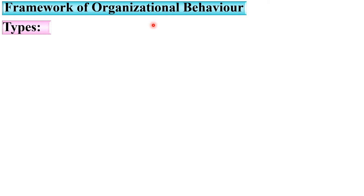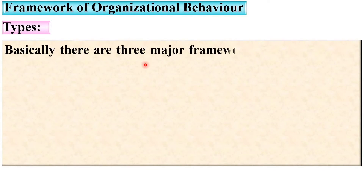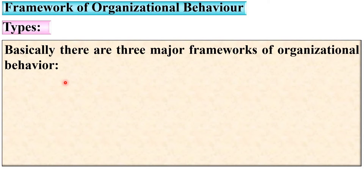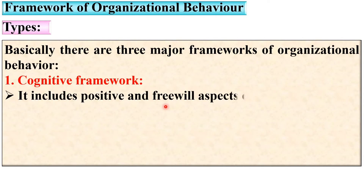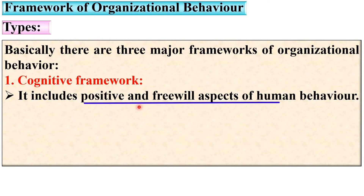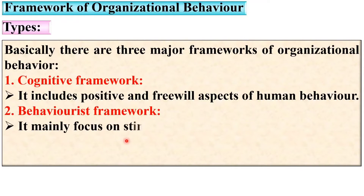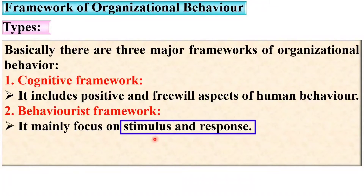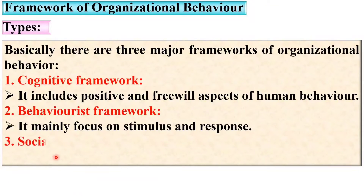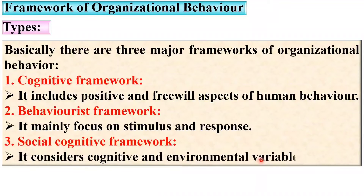Now let us see the types of the framework of organizational behavior. There are three major frameworks: first, the cognitive framework, which includes positive and free will aspects of human behavior; second, the behaviorist framework, which mainly focuses on stimulus and response (SR); and third, the social cognitive framework, which considers cognitive and environmental variables.